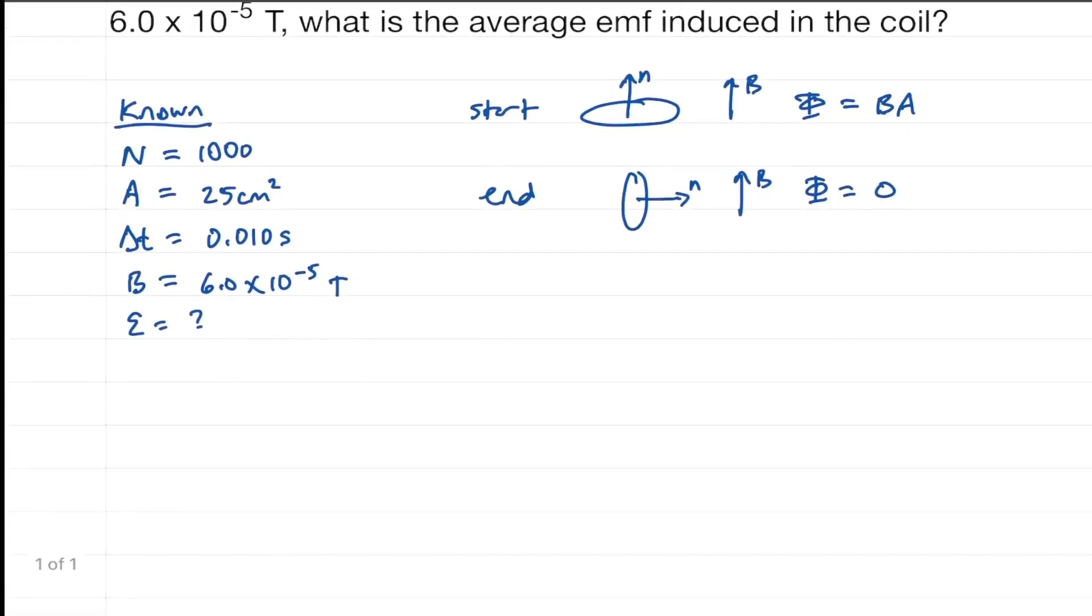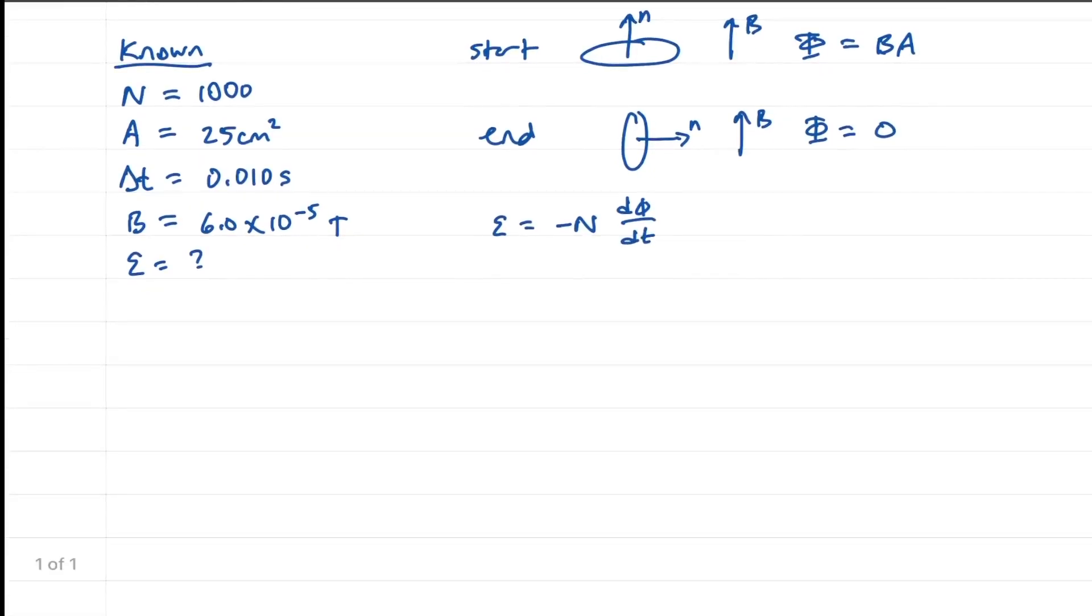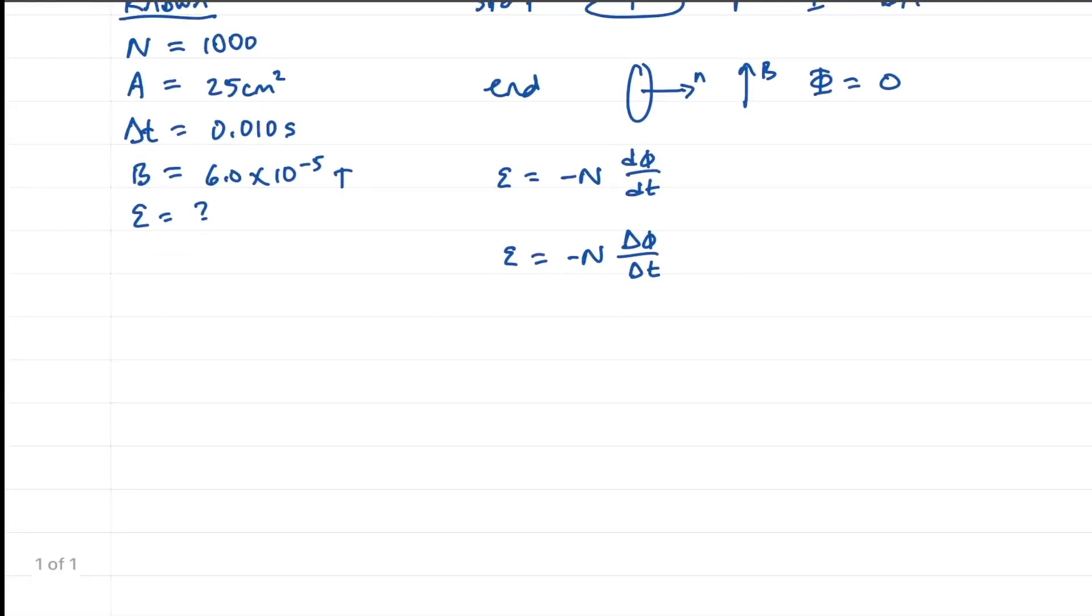And so the induced EMF is minus N times the change in flux with time. We don't need to integrate. We can just use the change in flux over the change in time, because we only have two fluxes in very distinct positions.